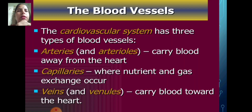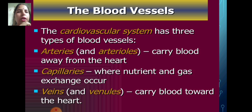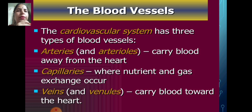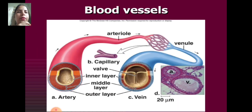The blood vessels. The cardiovascular system has three types of blood vessels: arteries carry blood away from the heart; capillaries where nutrients and gas exchange occurs; and veins and venules carry blood toward the heart.